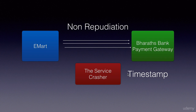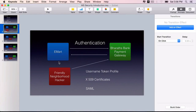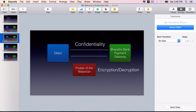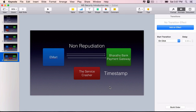WS Security provides timestamps to stop replay attacks from happening. You are going to implement all of these in the next few lectures: username token profile to authenticate, encryption and decryption using public keys and private keys, integrity using signatures, and finally the timestamp to prevent replay attacks.